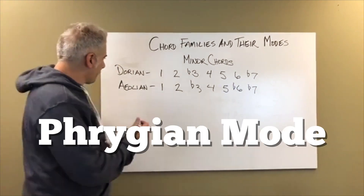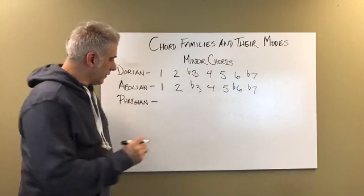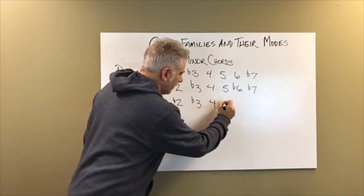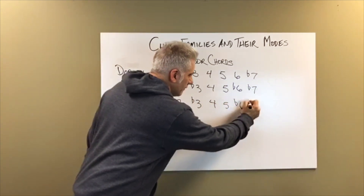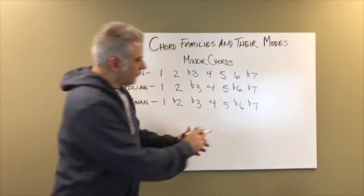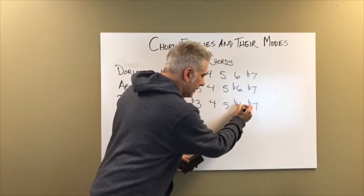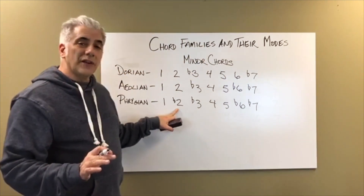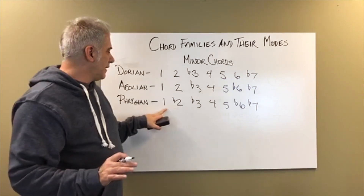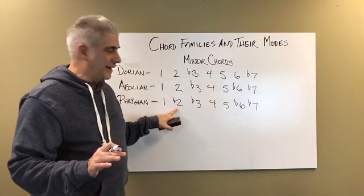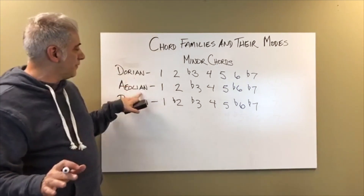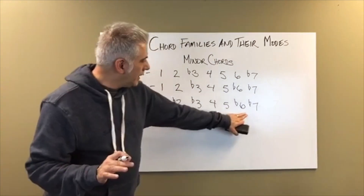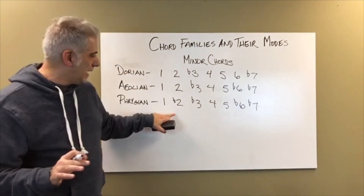The next scale is Phrygian — all modes of the major scale so far. Phrygian is 1, flat 2, flat 3, 4, 5, flat 6, flat 7. It's kind of like Aeolian except it has a flat 2, and that flat 2 wants to pull down to the one. This is what gives you that Spanish flavor. I have a Phrygian mode episode so you can really hear it. As you can see, we're adding an extra accidental each time.